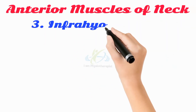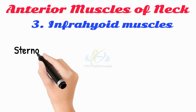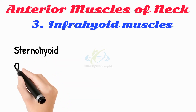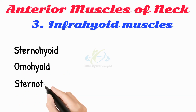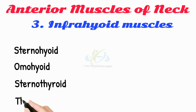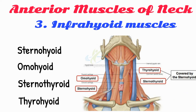The infrahyoid muscles are four muscles located inferior to the hyoid bone. These include the sternohyoid, omohyoid, sternothyroid, and thyrohyoid muscles. Generally, the main function of these muscles is positioning of the hyoid bone and movement of the thyroid cartilage of the larynx during vocalization, swallowing, and mastication.